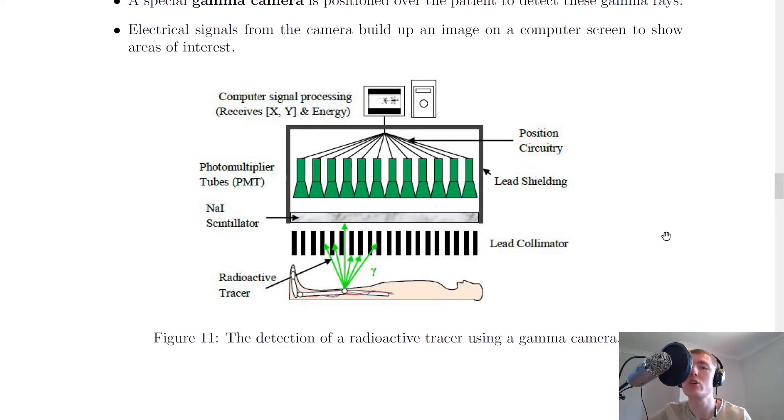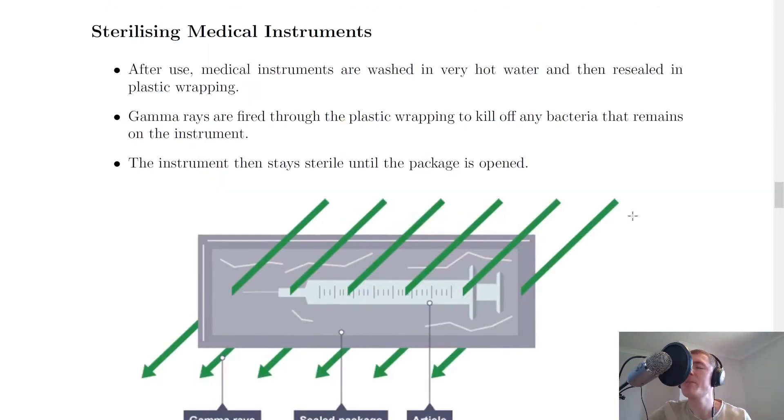The last medical use of radiation is sterilizing medical instruments. After use, medical instruments are washed in very hot water and then resealed in plastic wrapping. But very hot water and soap is not going to be enough to kill off all the bacteria that is on your surgical instruments.